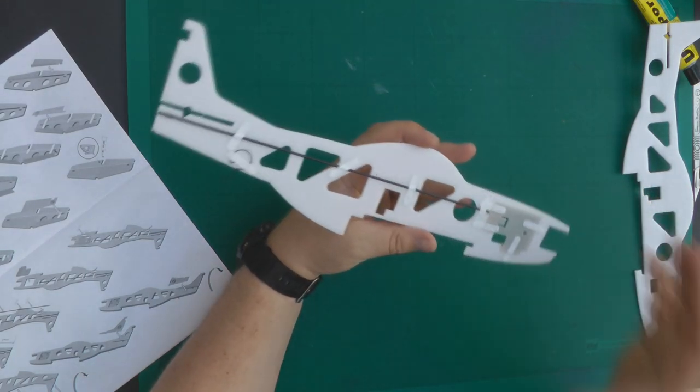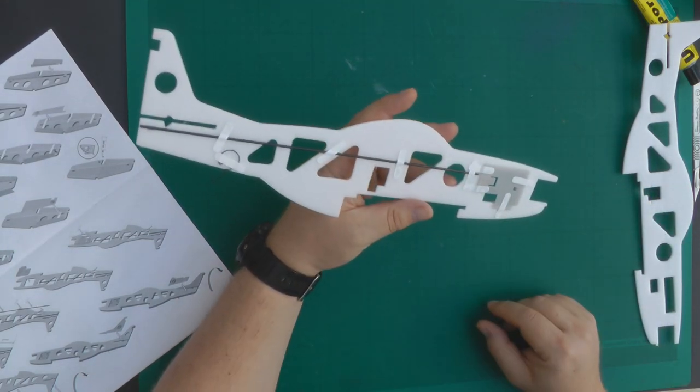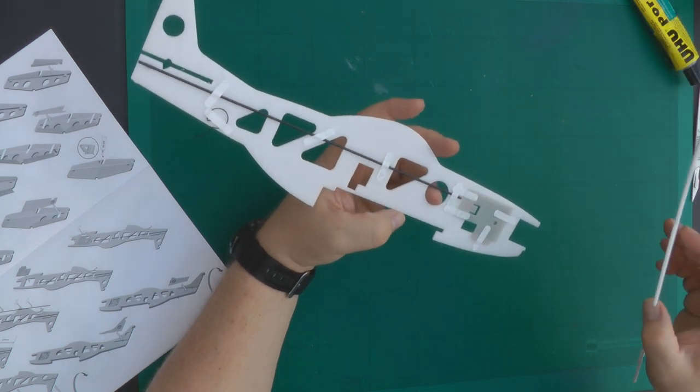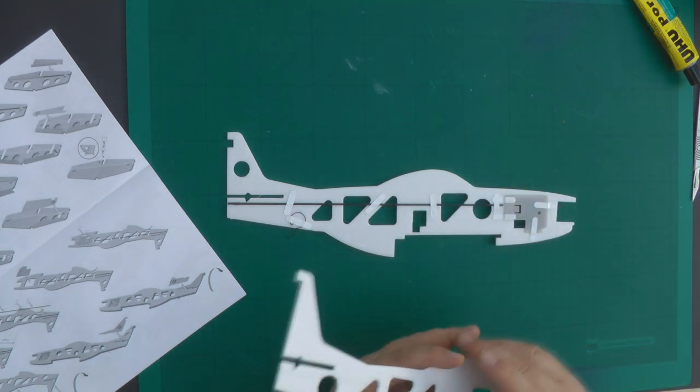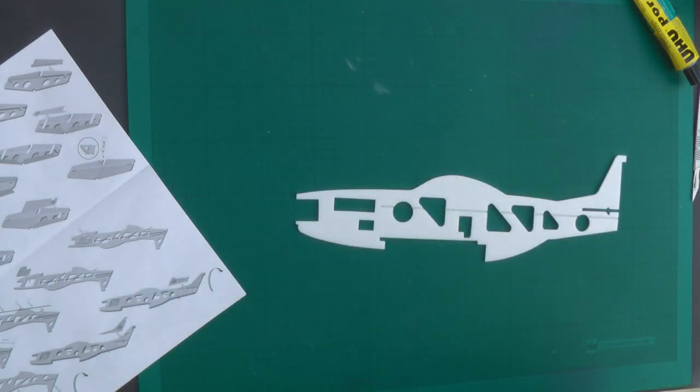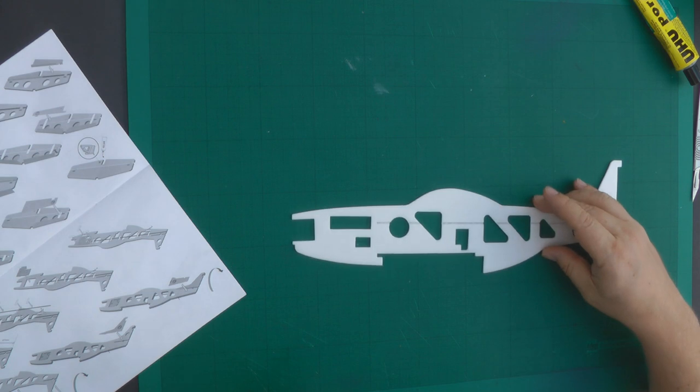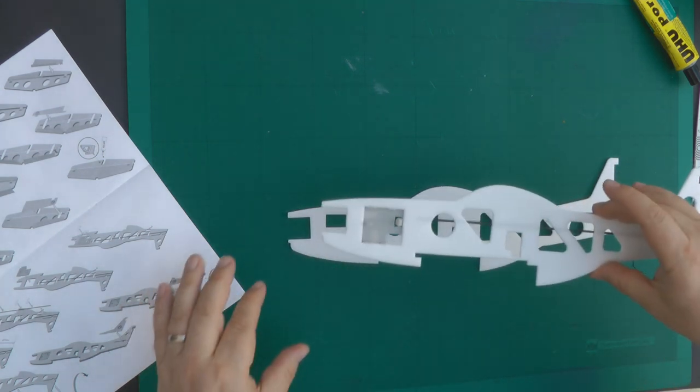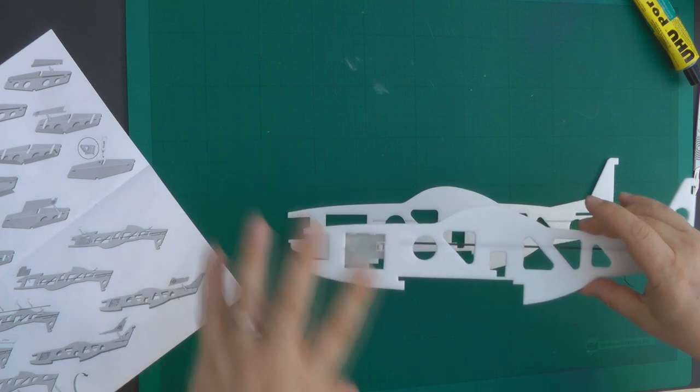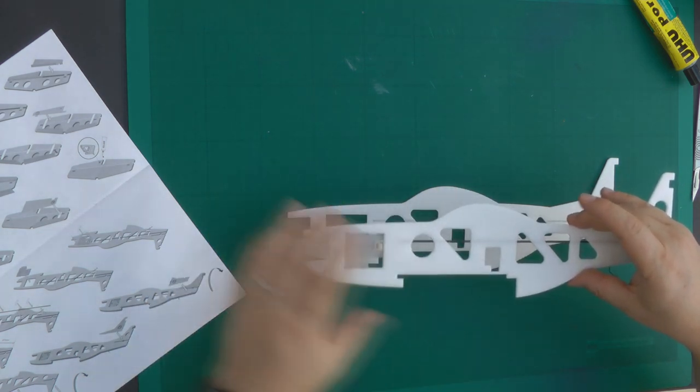So we are going to put the two fuselage halves together. I'm going to start by putting this one on the deck so I can start lining it up. I'm going to drop this one onto the top of it very carefully, and I'm going to start at the nose first and then work my way back.